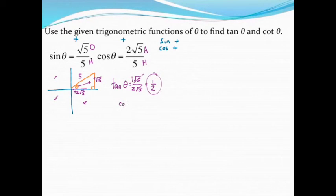Cotangent is just the reciprocal of that. Flip that around, and I get two over one, or just two for the cotangent.